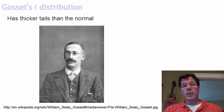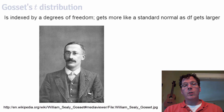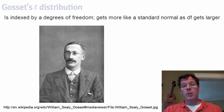The t-distribution has thicker tails than the normal. Unlike the normal, which is indexed by two parameters — the mean and the variance — we really only talk about the t-distribution as it is centered around zero with a standard formula for the scale. It's only indexed by one parameter, the so-called degrees of freedom. As these degrees of freedom increase, it gets more like a standard normal.